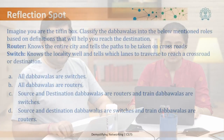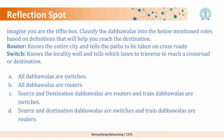Now we have another reflection question. Read the question, pause the video, pick your option, and then continue watching. Imagine you are at Tiffenbox — classify the Dabawalas into the roles below based on these definitions: A router is one who knows the entire city and tells the paths to be taken at crossroads. A switch is one who knows the locality well and tells which lanes to traverse to reach a crossroad or destination. Options: A: all Dabawalas are switches. B: all Dabawalas are routers. C: source and destination Dabawalas are routers and train Dabawalas are switches. D: source and destination Dabawalas are switches and train Dabawalas are routers.